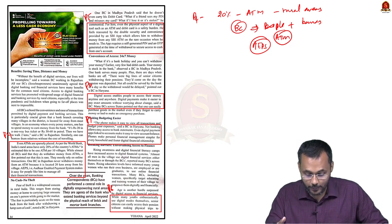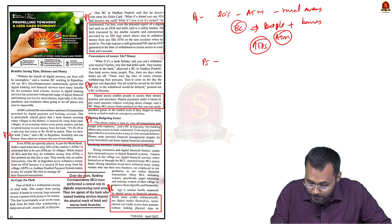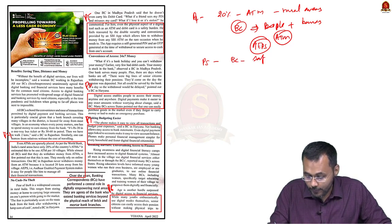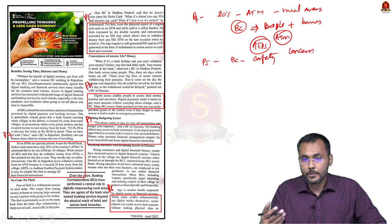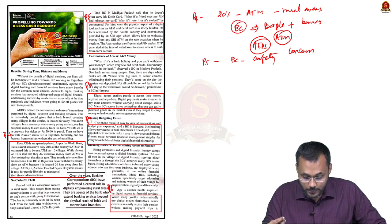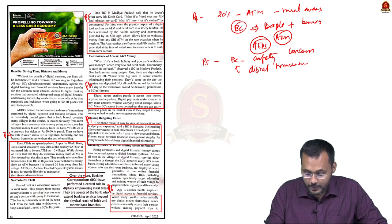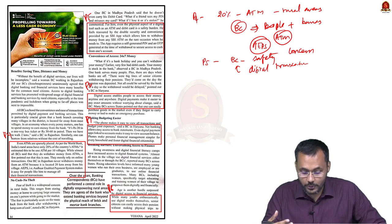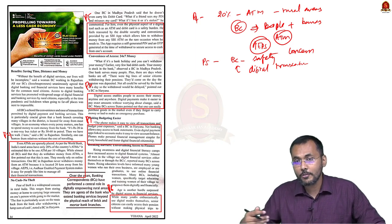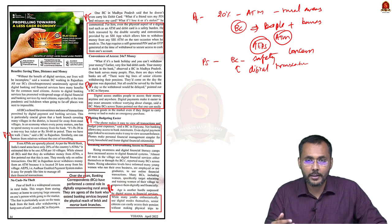Banking correspondents are also able to address safety concerns. As a common man in rural India is not tech-savvy and has concerns about security in digital transactions, banking correspondents address safety problems through OTP and PIN generation, enabling secure financial transactions. Digital transactions along with banking correspondents help empower rural masses in the financial world.